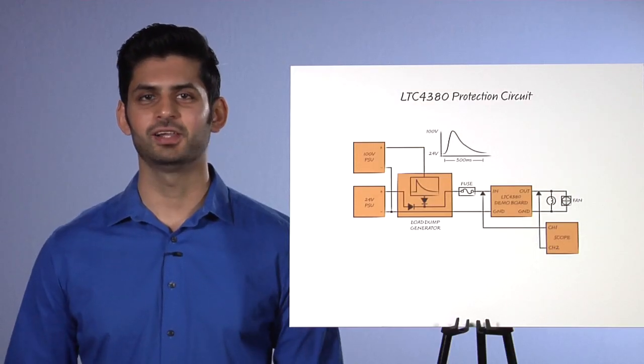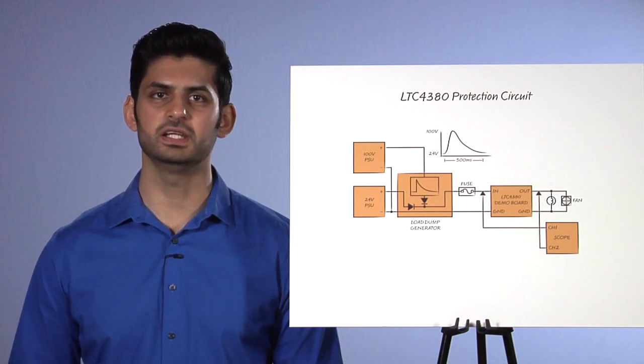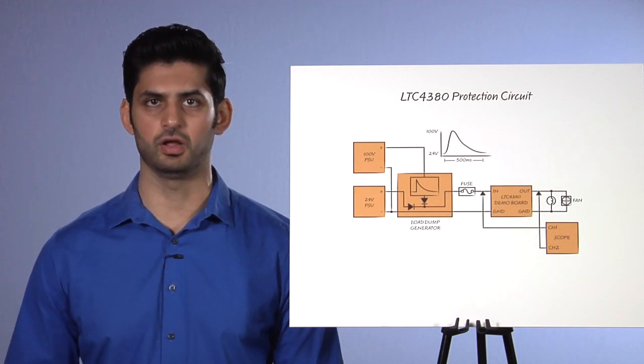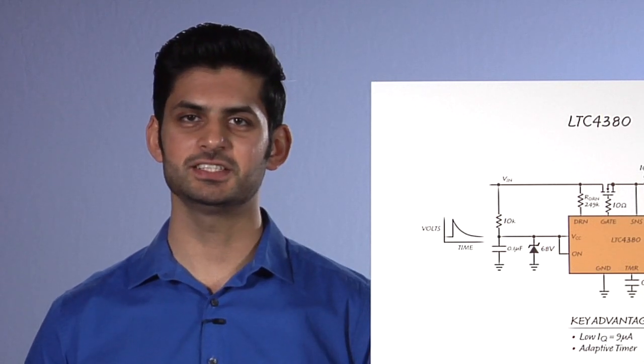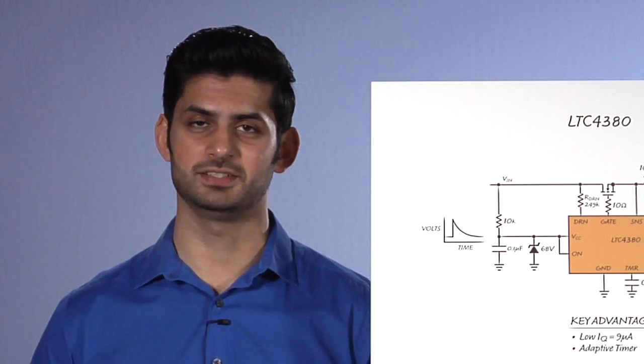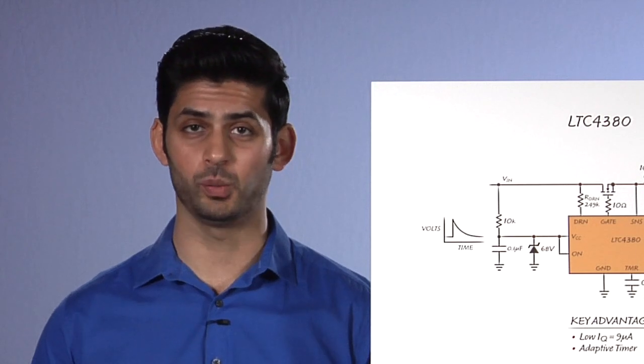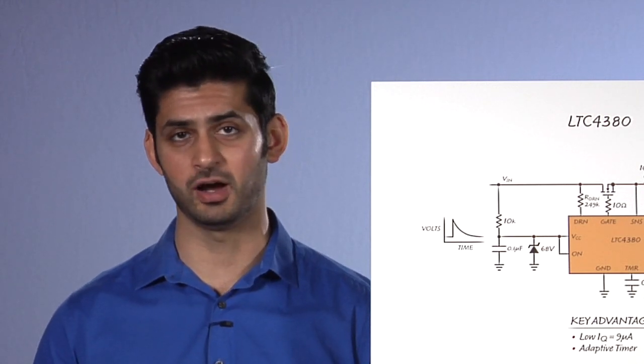Best of all, it provides all this functionality with a current drain of only 9 microamps typical on the system. In conclusion, the LTC4380 is a rugged, high-voltage surge stopper which can be used in a wide variety of applications. Its low quiescent current makes it ideal for always-on systems that are power conscious.